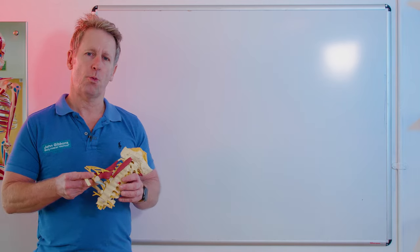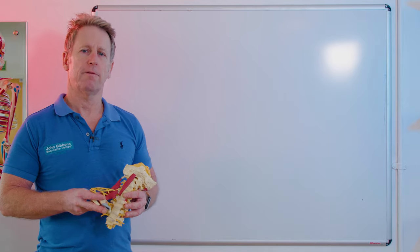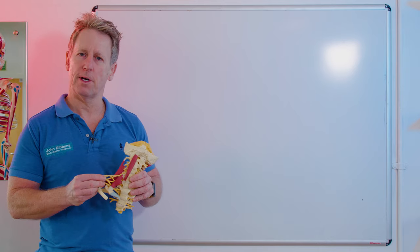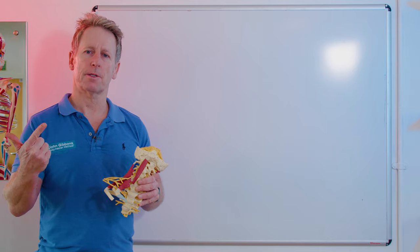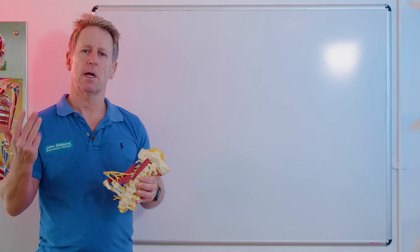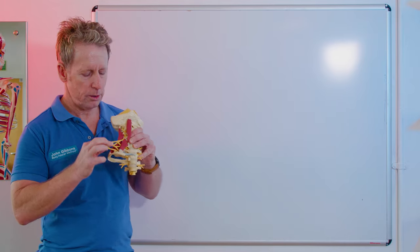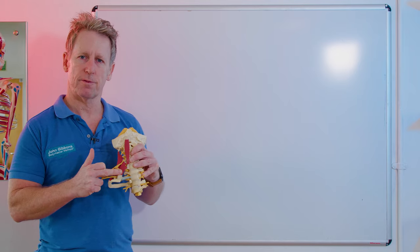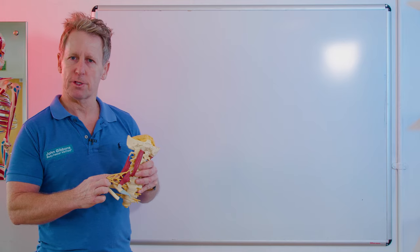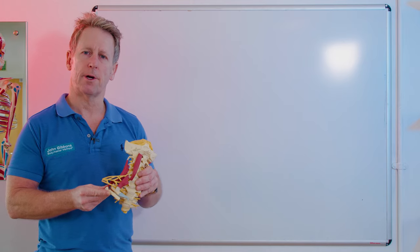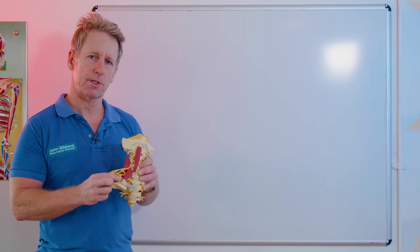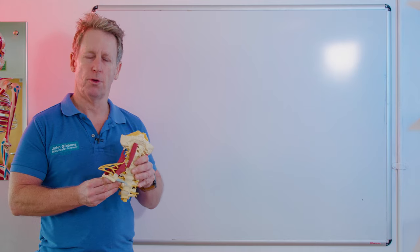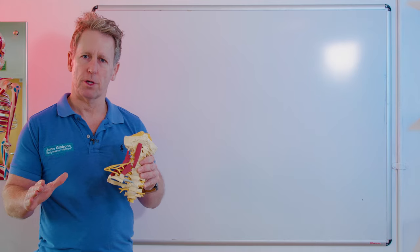The brachial plexus — think of the words: 'brachial' basically means the arm, and 'plexus' is part of the nerve supply. So it's going to come from the level of C5, C6, C7, C8, and T1. On this model you can see the brachial plexus, and it actually penetrates between the anterior and mid fibers of the scalenes in a space called the interscalene triangle. As it exits, it comes with the subclavian artery, comes over the first rib, then goes underneath the clavicle, underneath pectoralis minor, and off it goes.